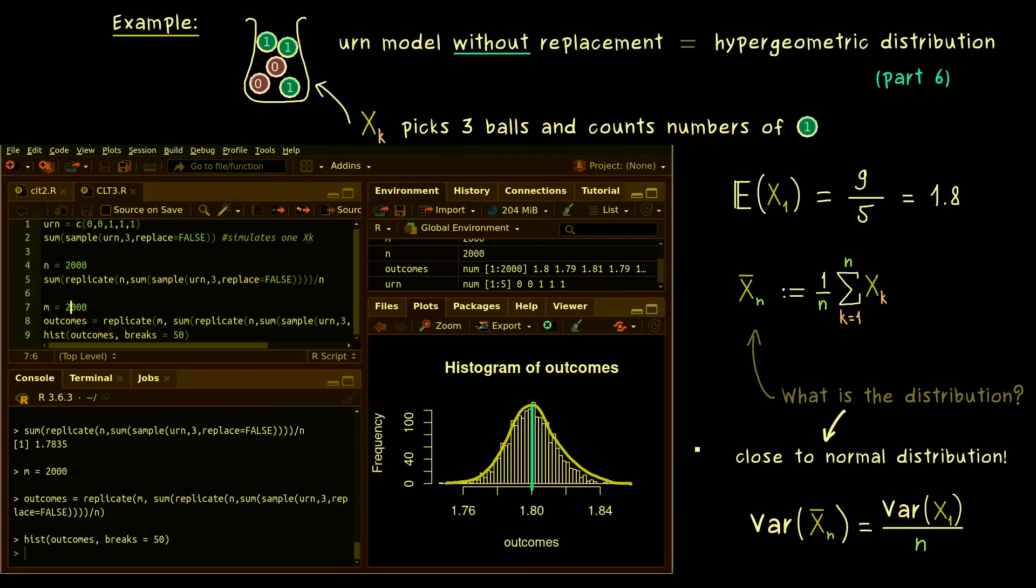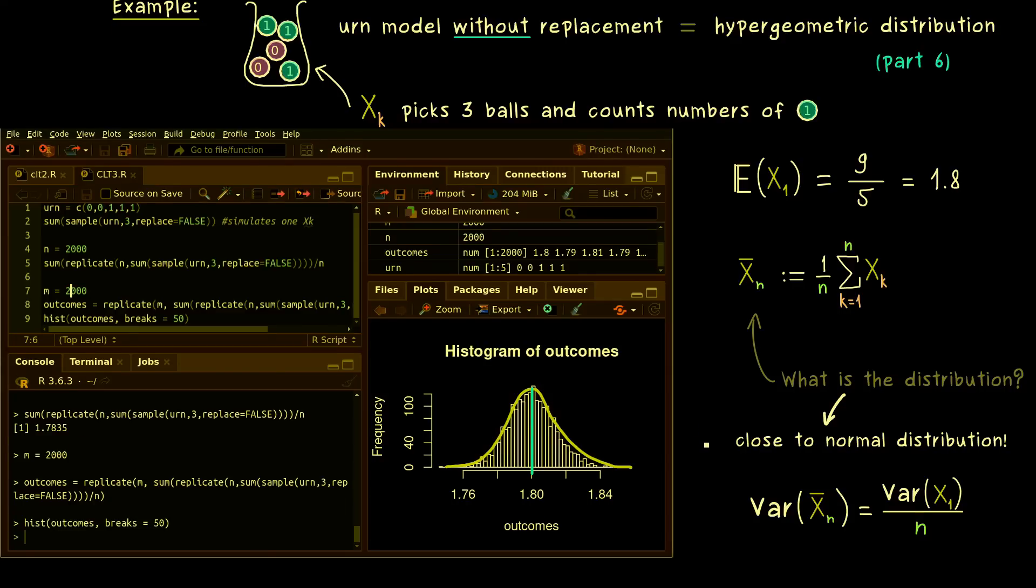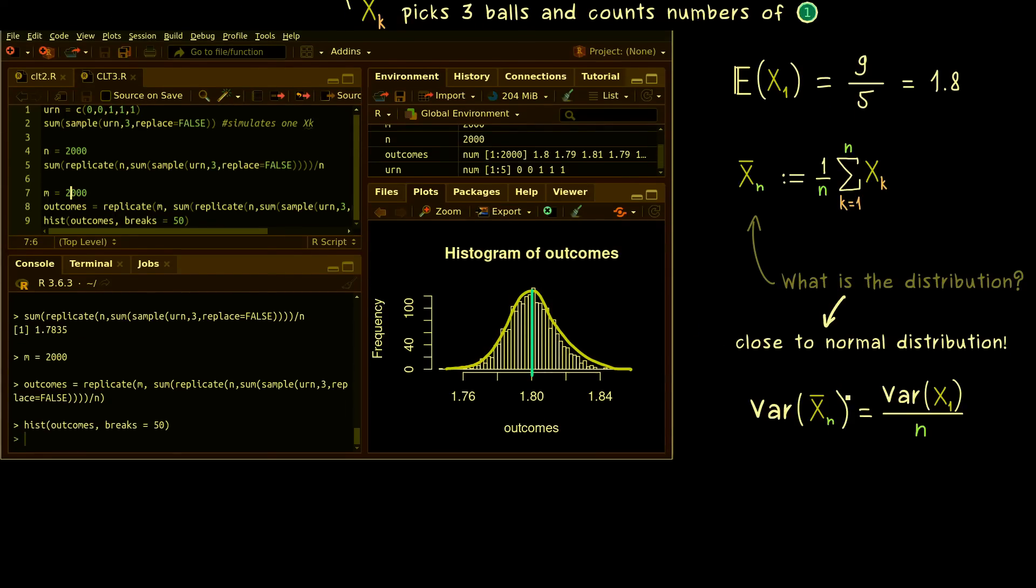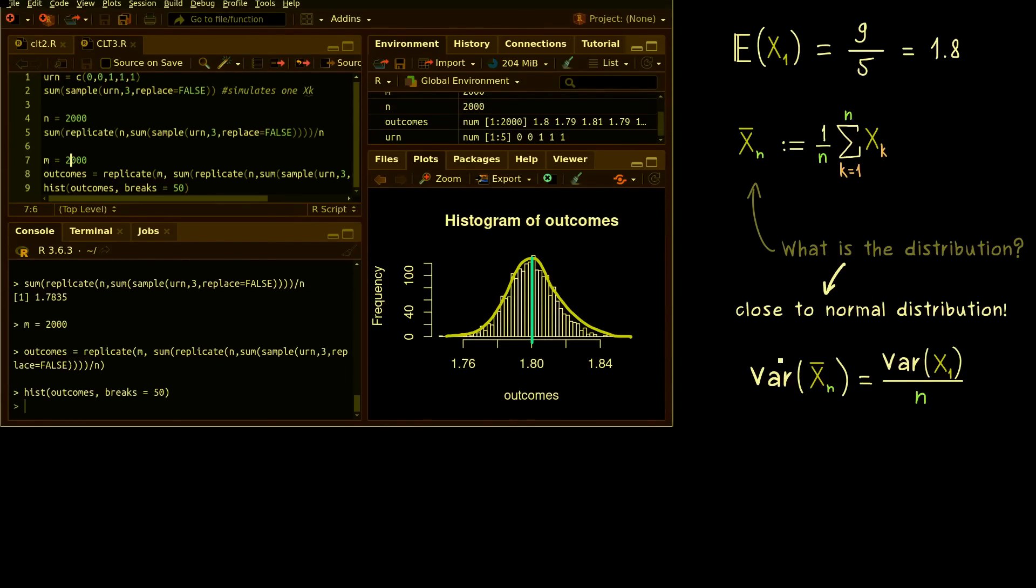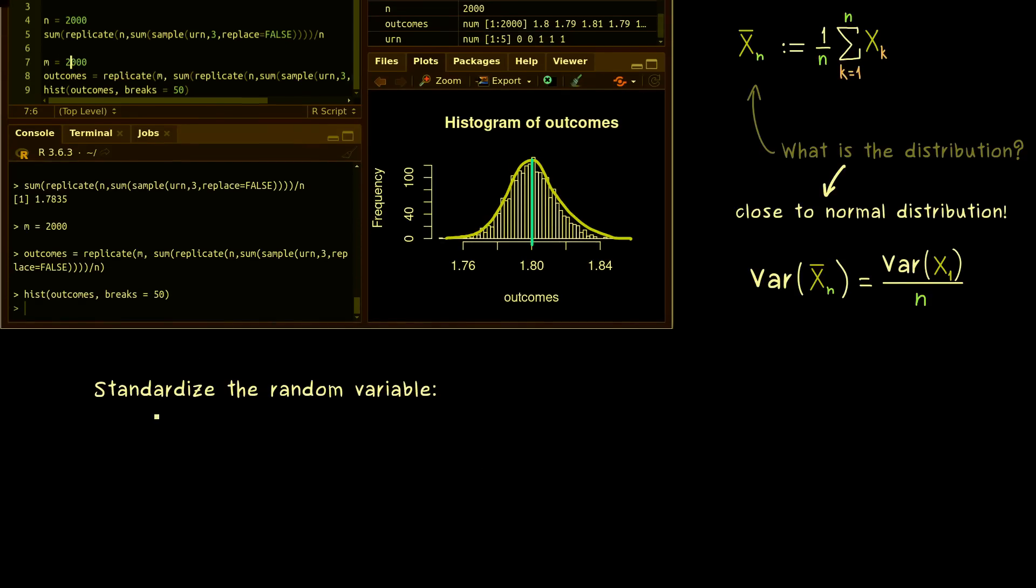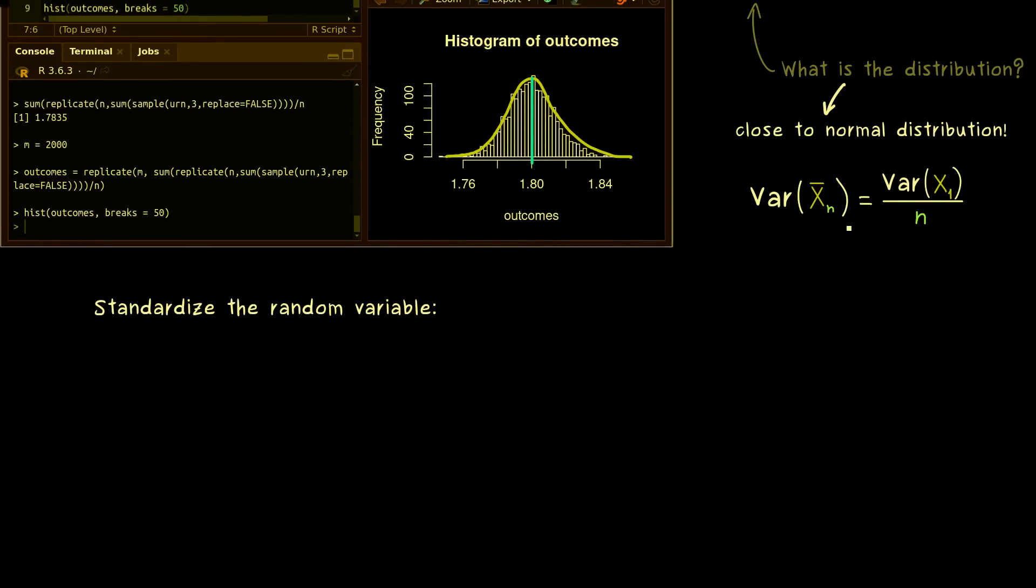And now the so-called central limit theorem tells us that in the limit, we actually get out the normal distribution. And it turns out, this is easy to see if we standardize the random variable. This simply means that we want to shift and scale the bell curve from before.